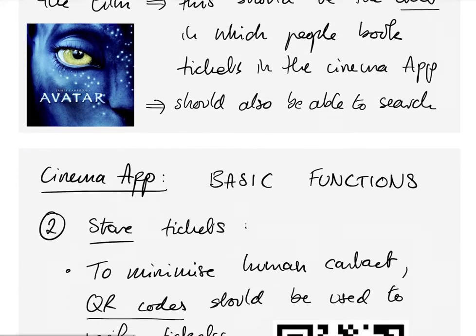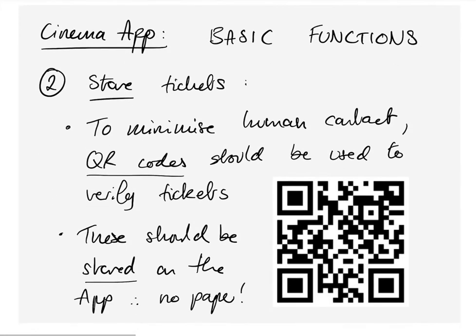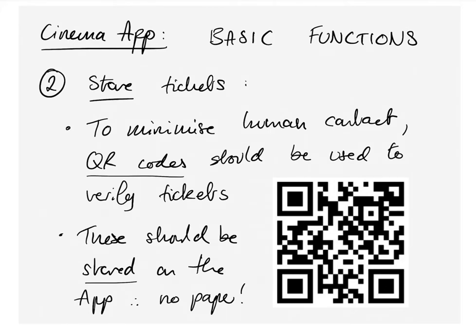The second basic function the app needs to provide is to store the tickets the user has bought. It can store tickets using QR codes, providing unique identifiers. When the customer goes along to the cinema they can just scan the QR code and walk right in, minimising human contact.